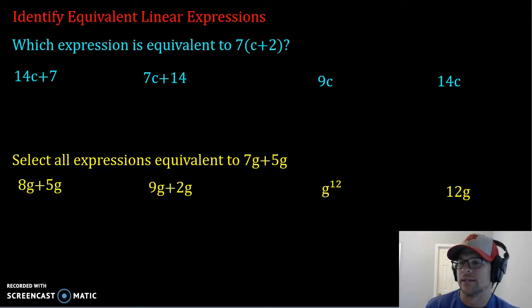Well, we have a number on the outside of the set of our parentheses that's being multiplied, so we're going to use the distributive property to distribute that 7 or multiply into both things on the inside.